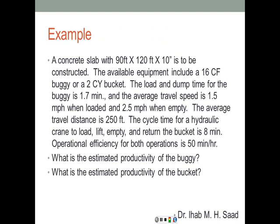Let's look at a simple example. We have a concrete slab 90 by 120 feet with a thickness of 10 inches. Available equipment includes a 16 cubic foot buggy or a 2 cubic yard bucket. Load and dump time for the buggy is 1.7 minutes; average travel speed is 1.5 miles per hour loaded and 2.5 miles per hour empty on return. Average travel distance is 250 feet. The cycle time for the hydraulic crane to load, lift, empty, and return the bucket is 8 minutes. Operational efficiency for both operations is 50 minutes per hour. We want to determine which system to select to finish the operation as quickly as possible.